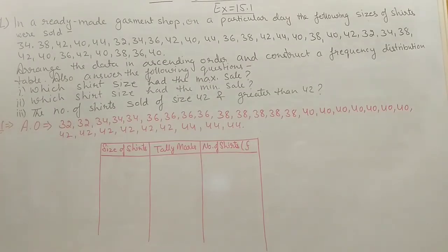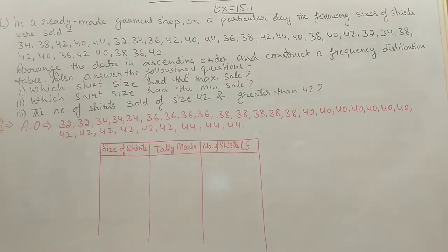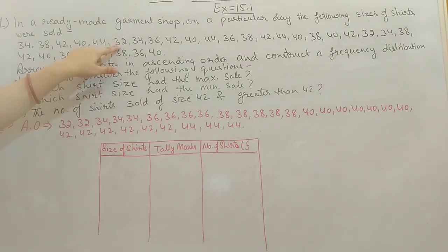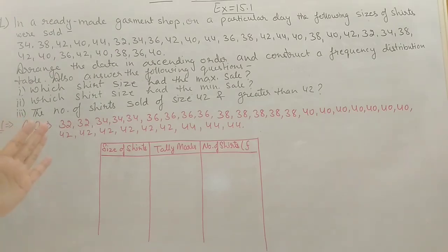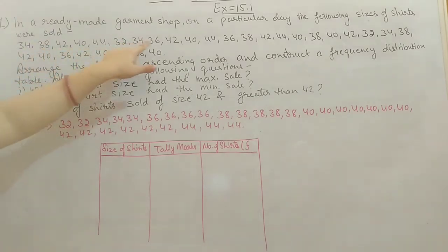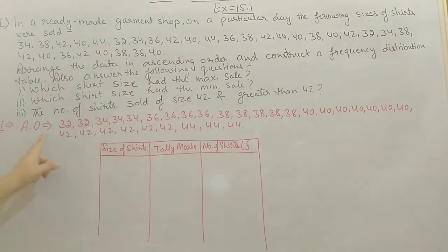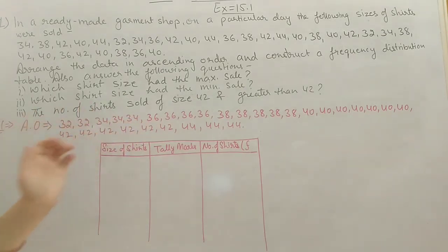Now we will do Exercise 15.1, Question 1. In a ready-made garment shop on a particular day, the following sizes of shirts were sold out. First thing we have to arrange this data in ascending order — small to big. From these sizes, the minimum size is 32 and maximum is 42. The sizes are even numbers: 32, 34, 36, 38, 40, 42, 44. Count each size carefully and arrange in ascending order.